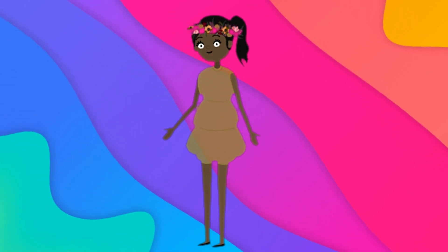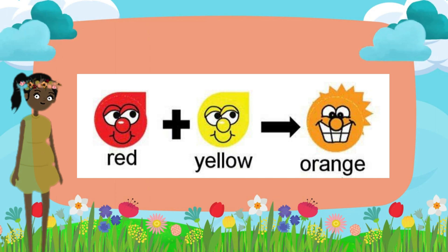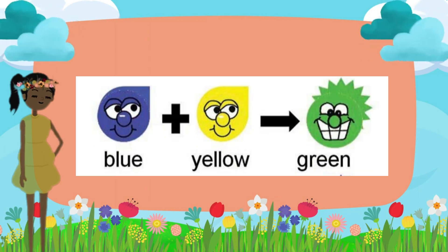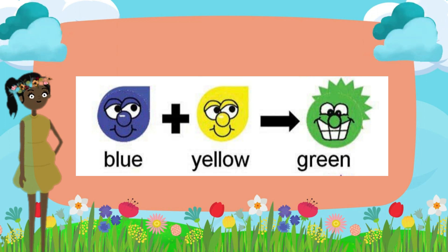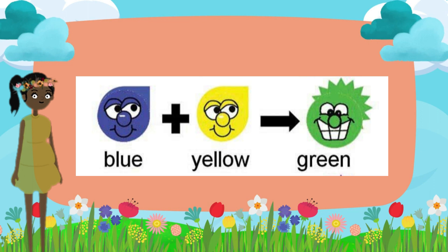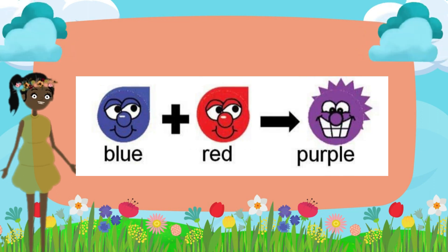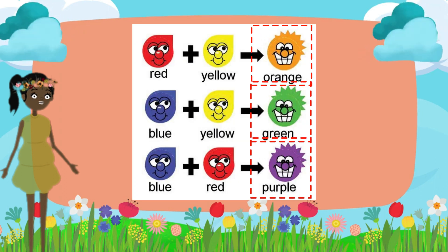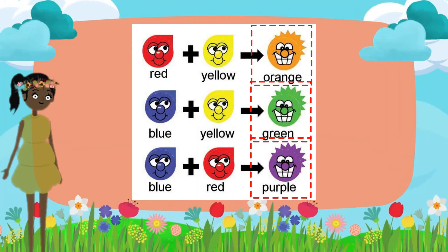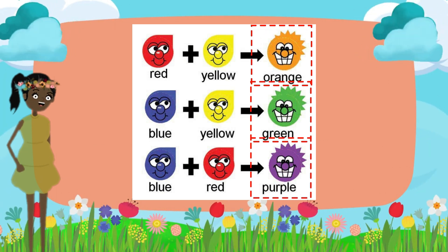Let's meet them! Orange — made by mixing red and yellow, it's as warm as a summer day. Green — created by mixing blue and yellow, it's the color of lush forests. Purple — formed by mixing red and blue, it's the color of royalty and magic. These secondary colors are like the sidekicks to the primary colors, created by combining them, and they bring even more variety to the world of colors.